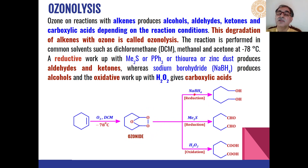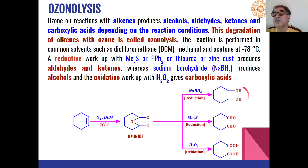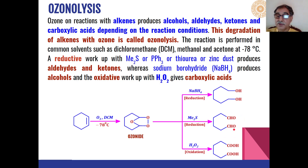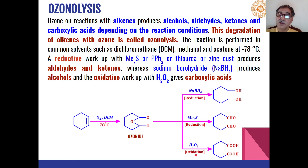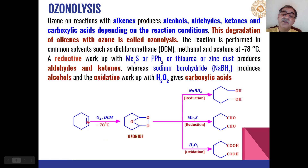If we react this ozonoid with sodium borohydride, reduction takes place to give alcohols as the product. Similarly, if dimethyl sulfide is used as the reducing agent, aldehydes are formed as the product. Whereas if hydrogen peroxide is used as the oxidant for this ozonoid, carboxylic acids will be formed as the product.